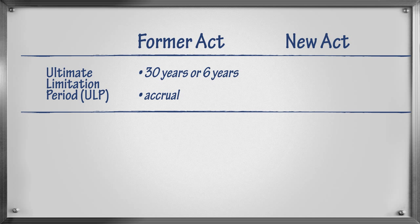For example, in a negligence claim, the ultimate limitation period would not start to run until both the negligent act and the damage had occurred, because these are both elements of a claim in negligence.